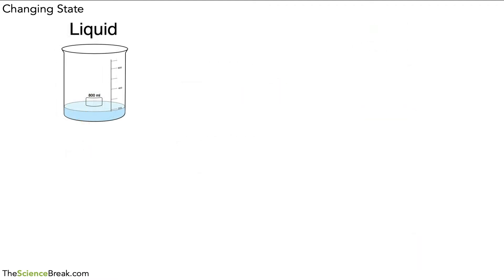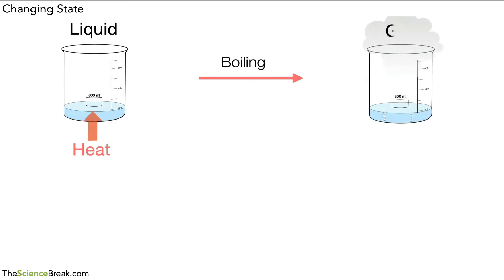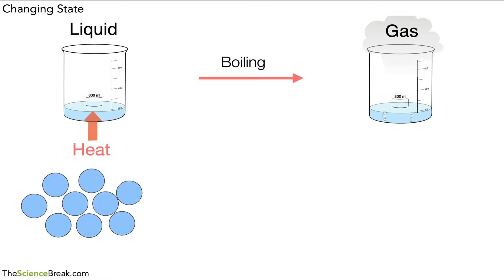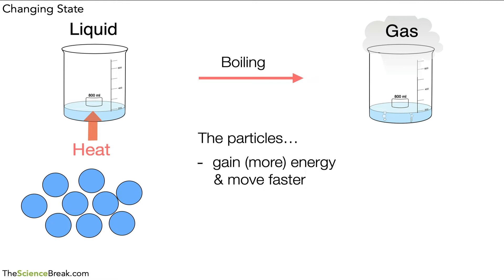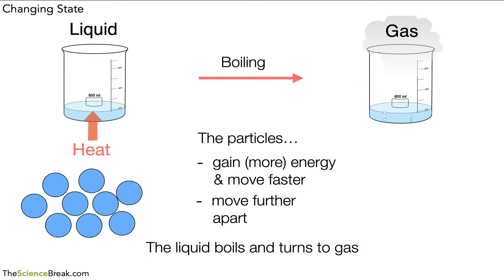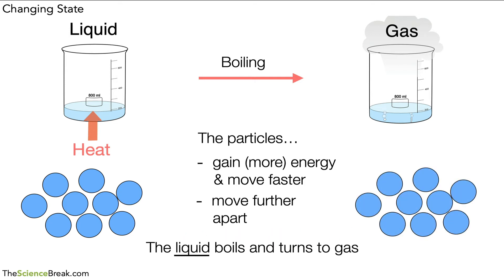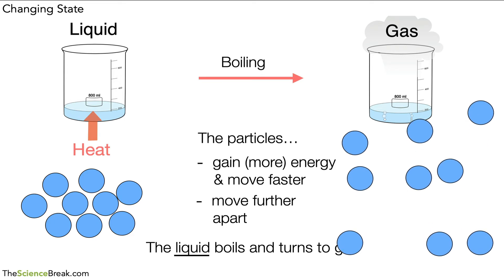Now let's look at what happens when a liquid turns to gas. We can heat our liquid; it will start boiling and turn to a gas. The key things to remember are that the particles gain even more energy and move faster — we can say they gain kinetic energy. As a result, the particles move further apart from each other, the liquid boils and turns to gas. Particles cannot boil; they can only move further apart or closer together.